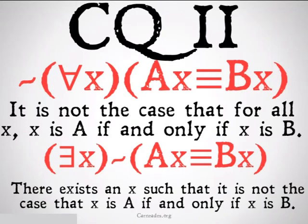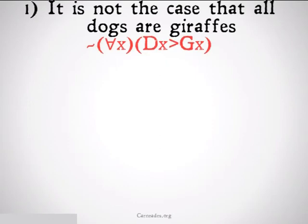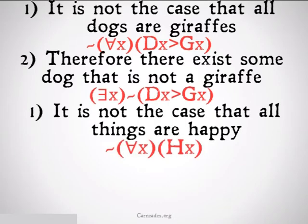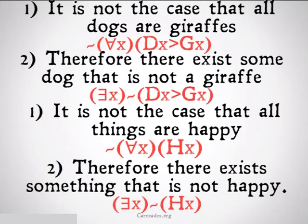The specific examples will help even further. It is not the case that all dogs are giraffes; therefore, there exists some dog that is not a giraffe — in fact, there exist a lot of dogs that are not giraffes. The denial of the universal just says there exists something that is not whatever the universal is talking about. It is not the case that all things are happy; therefore, there exists something that is not happy.